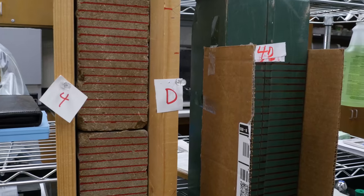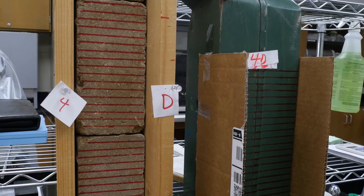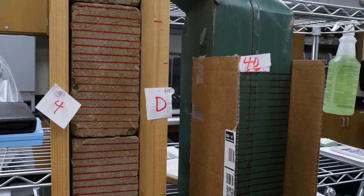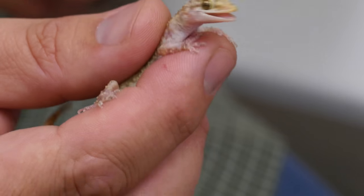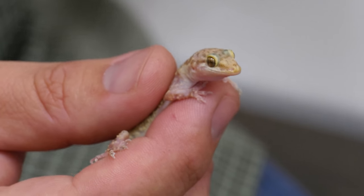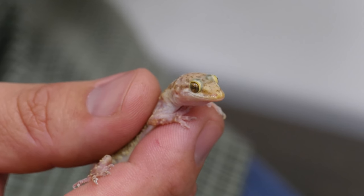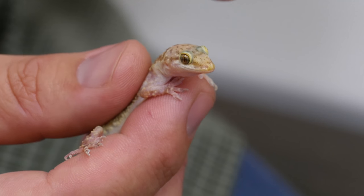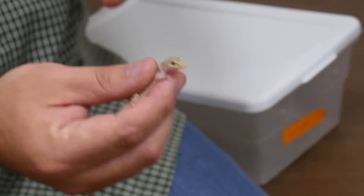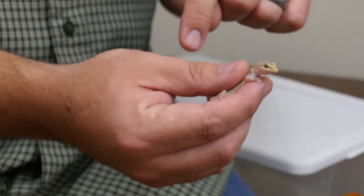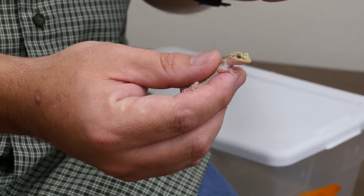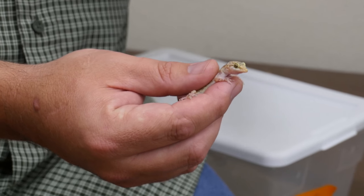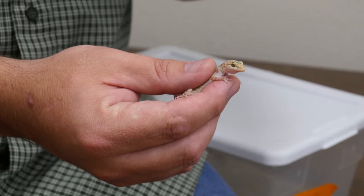It's been shown with this other group called anoles that evolution can happen really quickly. And you can see changes, especially in things that are really important for survival, like toe pads and claws. You can imagine big toe pads are going to be less effective on brick, where the claws would be more effective. But on the metal, you'd see just the opposite.